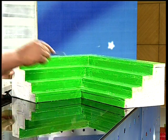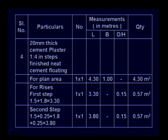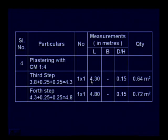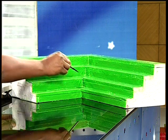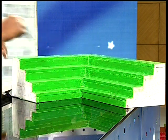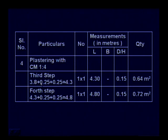5 plus 0.25. The length is equal to 3.3 multiplied with the rise that is 0.15, giving a quantity of 0.57 square meters. For the third step, it is again 0.25 meters extra in both width and length directions. So third step: 3.8 plus 0.25 plus 0.25 equals 4.3 meters. Length is 4.3 multiplied with height 0.15, giving a quantity of 0.64 square meters.